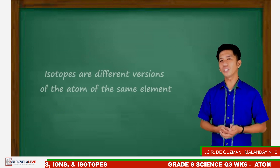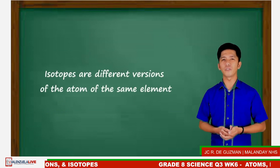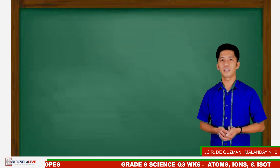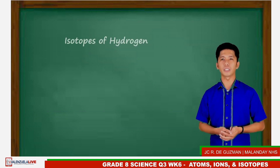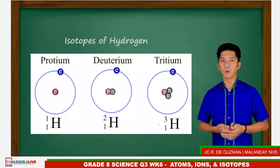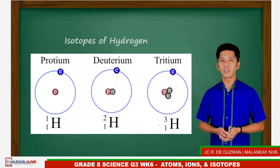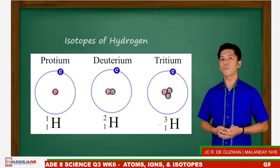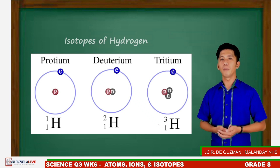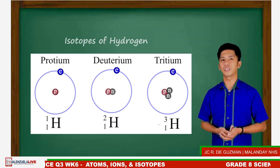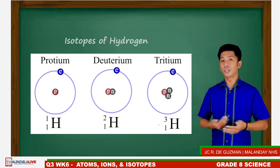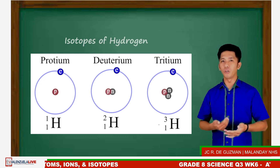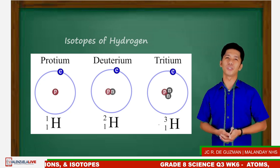In other words, isotopes are different versions of the atom of the same element. Hydrogen has also three isotopes, namely protium, deuterium, and tritium. Protium or hydrogen-1 has one proton but it doesn't have neutrons. Deuterium has one proton and one neutron, while tritium has one proton and two neutrons.